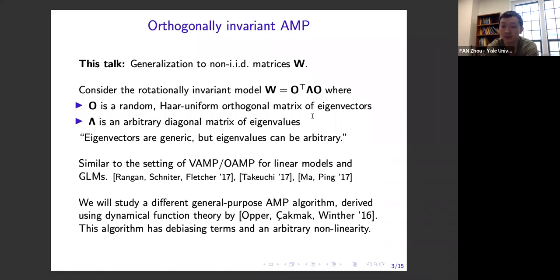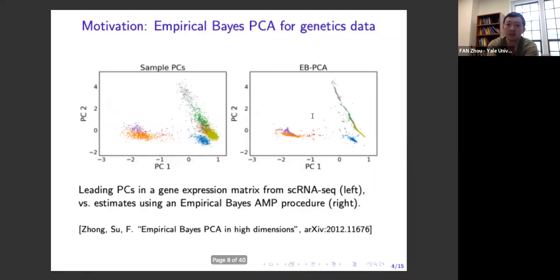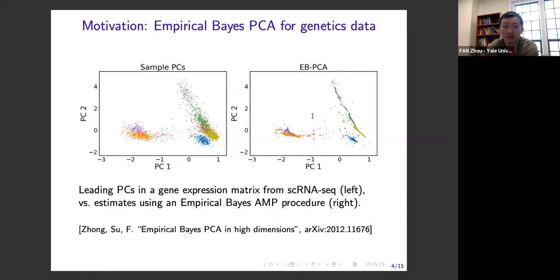The result I'll describe is a rigorous analysis of this algorithm. I started to work on this problem because we were trying to apply AMP to do PCA for gene expression data. On the left is a typical PCA analysis of a gene expression matrix from a single-cell RNA-seq experiment, where each point corresponds to the embedding of a cell in this space. This is a very high-dimensional application, so we expect a lot of noise when you just do PCA.